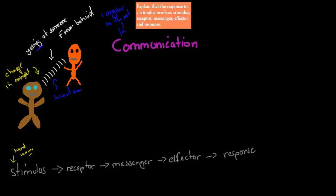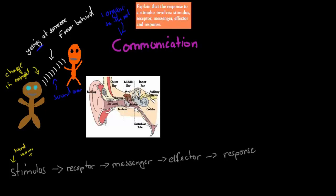The sound waves are produced by the orange person and being sent to the other individual. The receptors in that person's ear pick up the sound. The sound waves travel through the ear, make the eardrum vibrate, and ultimately make hairs in the cochlea move. There are receptors in the cochlea that pick up the sound wave — these would be mechanoreceptors, because the vibrating hair is a mechanical movement.